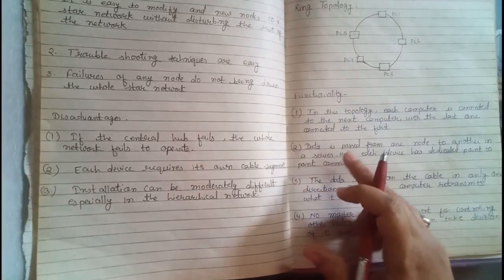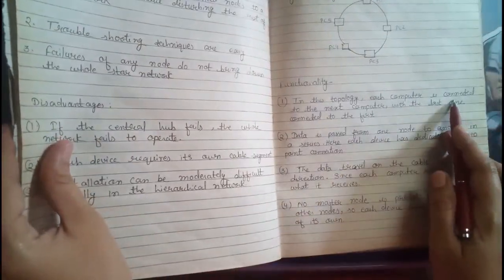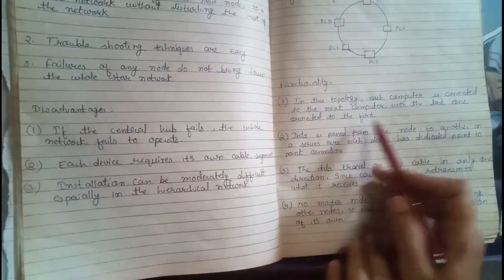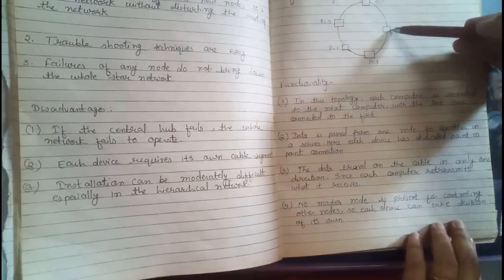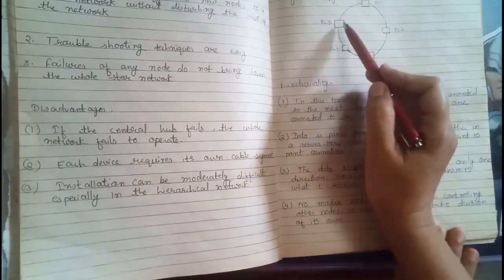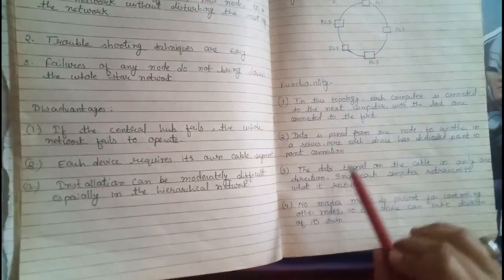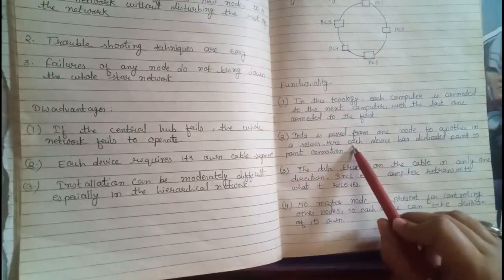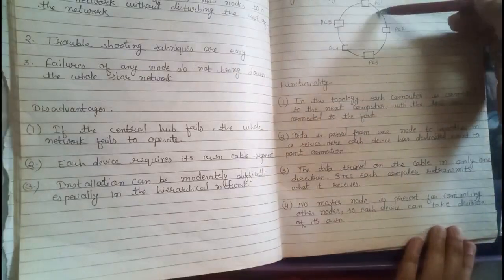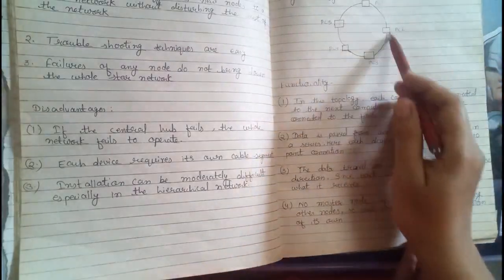Now, the functionality which I explained, read here. In this topology, each computer is connected to the next computer with the last one connected to the first. We have seen here that PC1 is connected to PC2. PC2 is PC3. And then next to next. PC5 is the last PC in this structure. And this PC is connected to first PC, that is PC1. Data is passed from one node to another in a series. Here, each device has dedicated point-to-point connection. PC1 is connected to PC2. And PC1 is connected to PC5. There is a point-to-point connection between nodes.